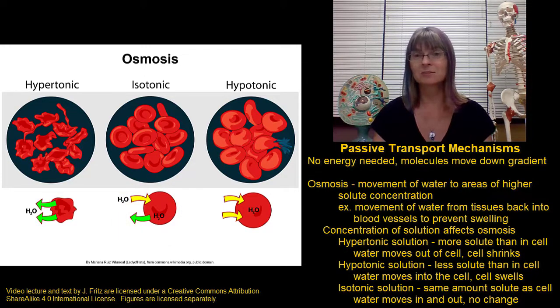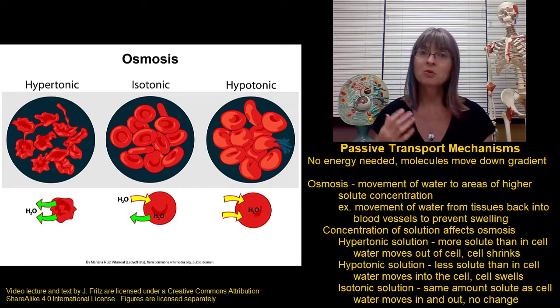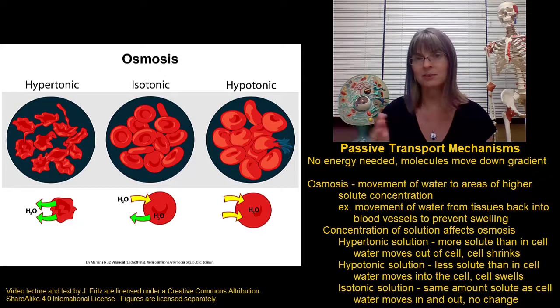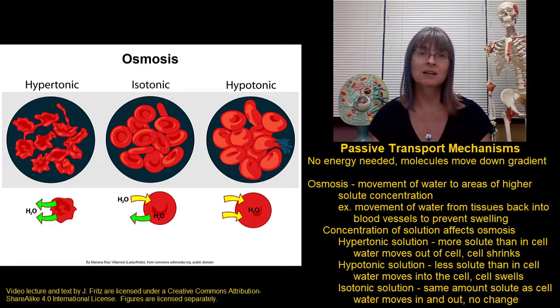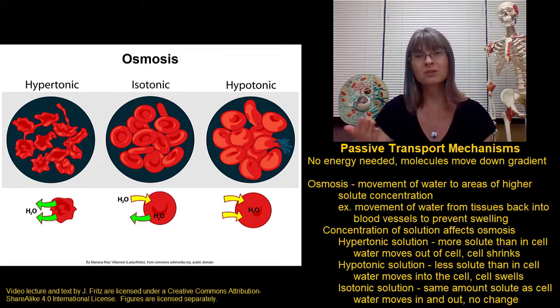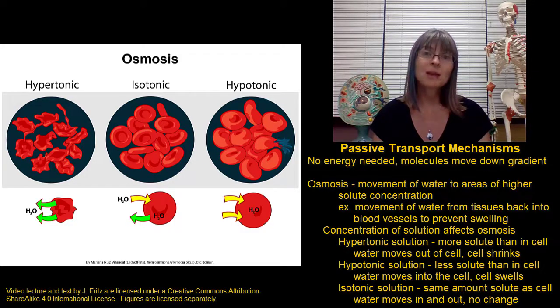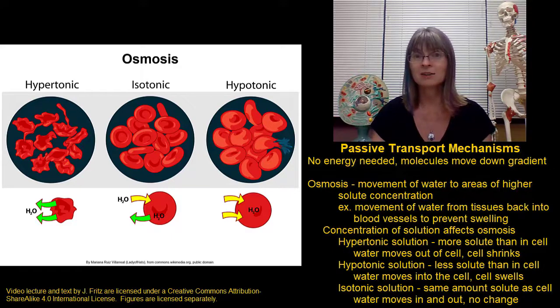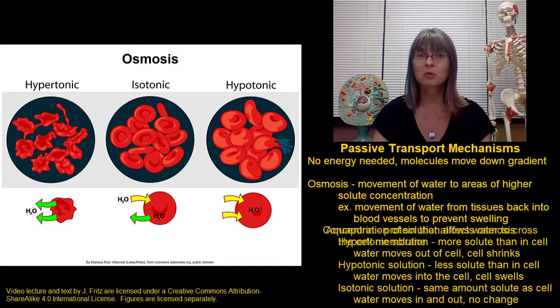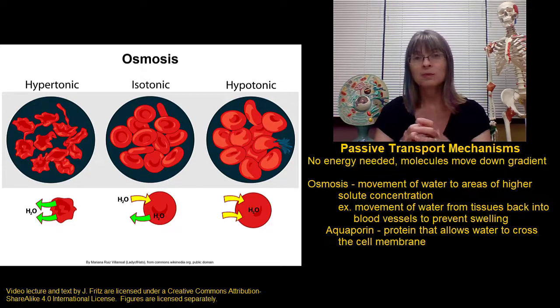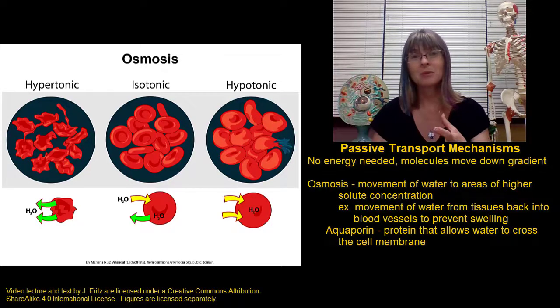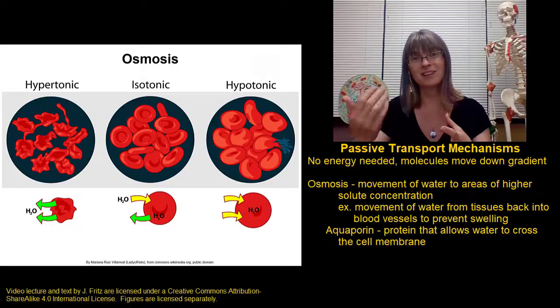One last thing about osmosis. We're talking about the movement of water back and forth across the membrane. And water is small enough that it can wiggle across the membrane on its own. But it's very polar, so it can't cross very easily. In order to make it easier for water to move in and out of cells, a lot of cells have a transport protein called aquaporin. Aquaporin opens a channel through the membrane that will allow water to move in and out of the cell.